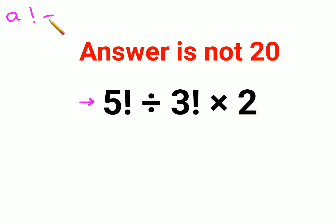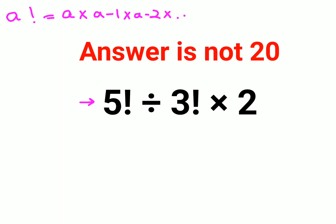Factorial is nothing but a basic expansion of products in decreasing order, and you will keep doing this multiplication until you reach the value of 1.